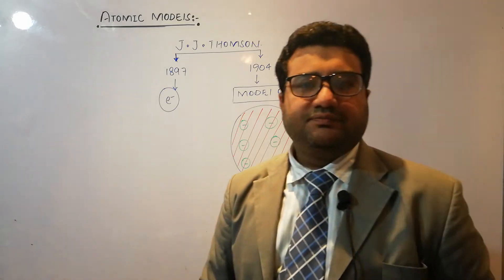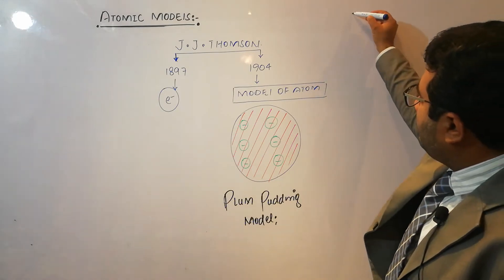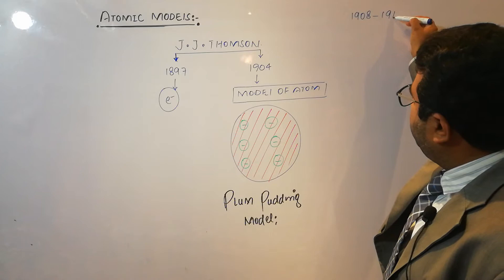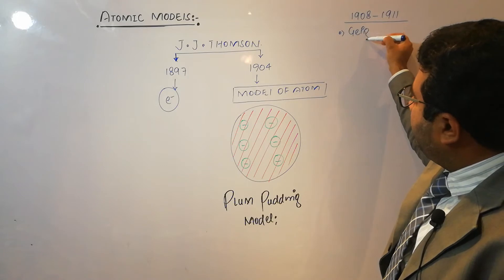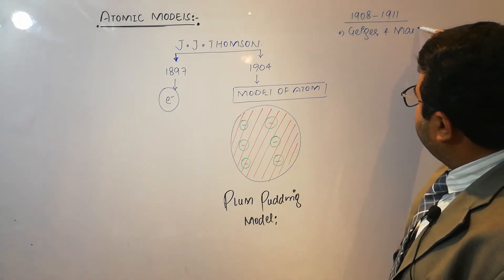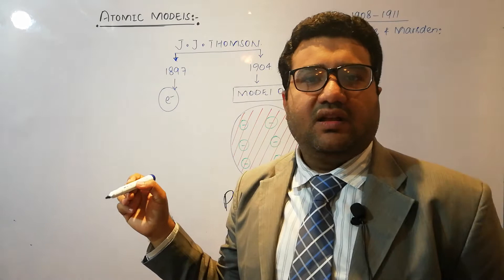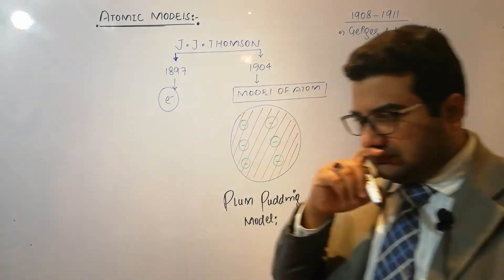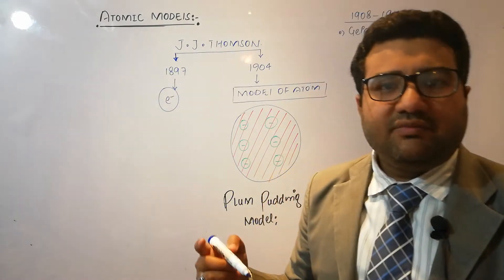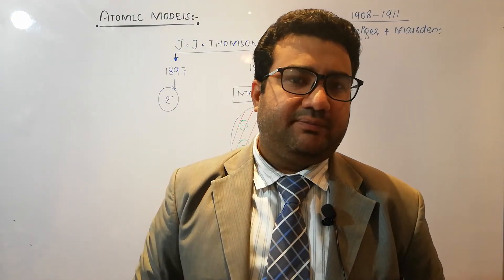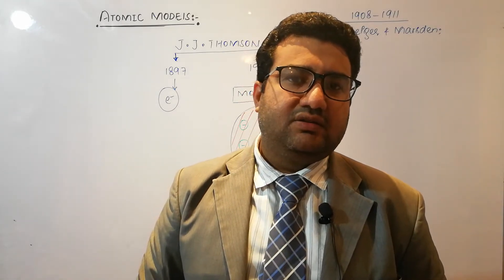But this model couldn't gain much fame. From 1908 to 1911, Geiger and Marsden performed a series of experiments under the supervision of Ernst Rutherford. They were trying to count the number of alpha particles emitted by a radioactive element in a specified interval of time, and also to observe the penetration of alpha particles through metallic foils.